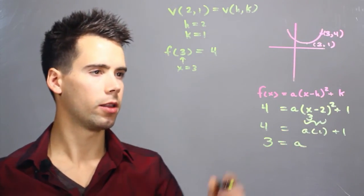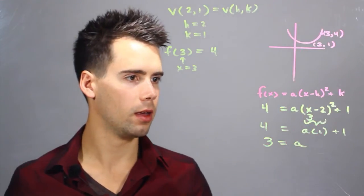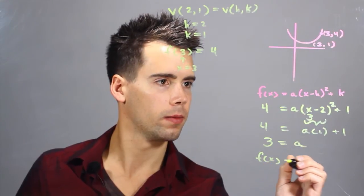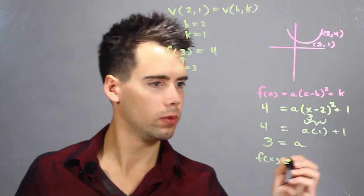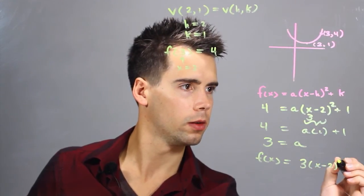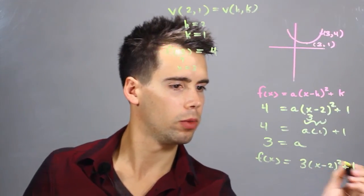Now we can rewrite this whole equation using our value of a and we find that f(x) is equal to 3 times (x minus 2) squared plus 1.